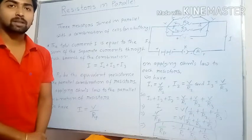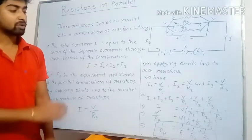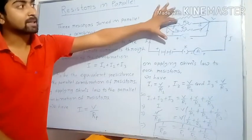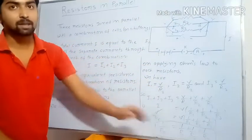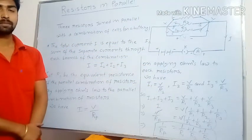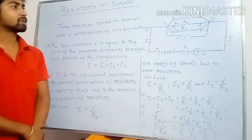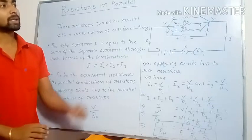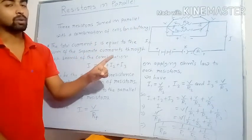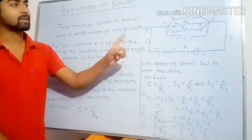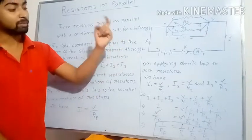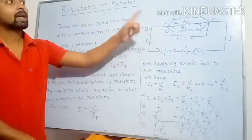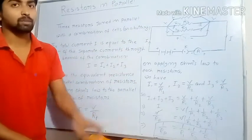So, in summary: when resistors are in a parallel combination, the electric current through each resistor is different, the potential difference across each resistor is the same, and the reciprocal of the equivalent resistance Rp equals the sum of the reciprocals of each individual resistor's resistance.